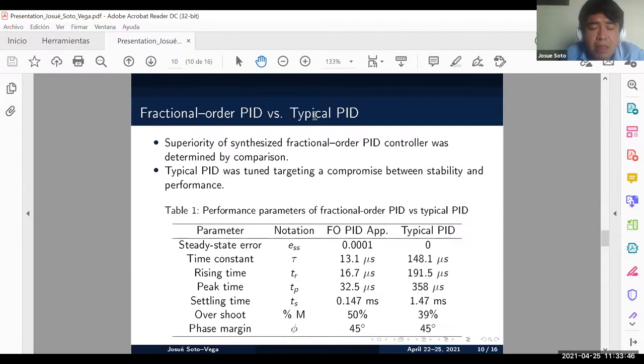In addition, the performance was compared between classic PID controller and non-integral order PID controller through performance parameters. The main performance parameters are the time constant and the settling time. We can see that in the case of fractional control these parameters are smaller. Therefore, fractional control has a faster dynamic.